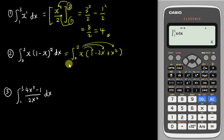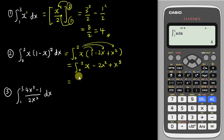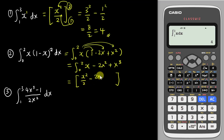Now multiply x into every term before integrating, giving x minus 2x squared plus x cubed. Then integrate: x becomes x squared over two, minus 2x squared becomes 2x cubed over three, and x cubed becomes x to the power four over four.